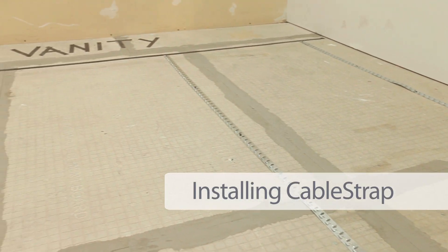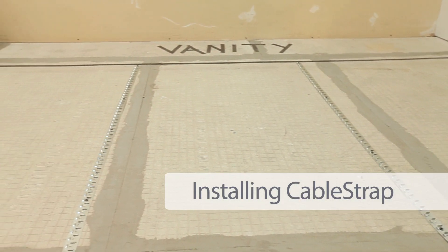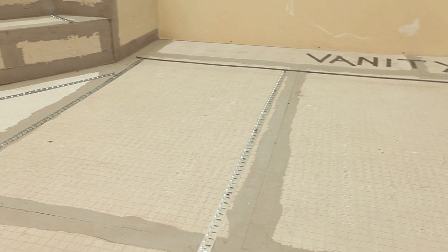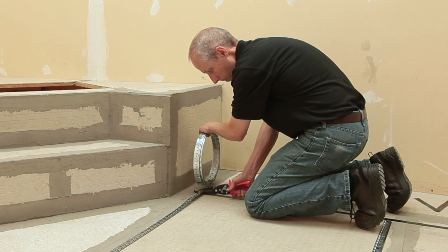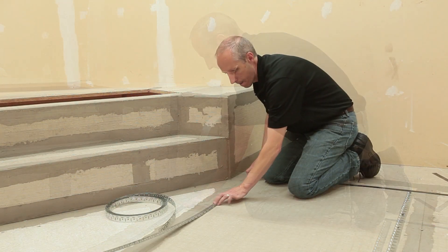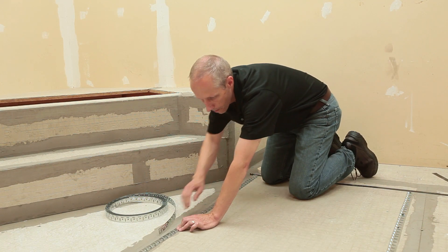Start by installing the cable strap at each end of the space wire will span between. Leave a path for the wire from the thermostat location to the closest strap. Cable strap can be cut using metal shears. Place strapping at the edge of the toe kick in front of sink cabinets.